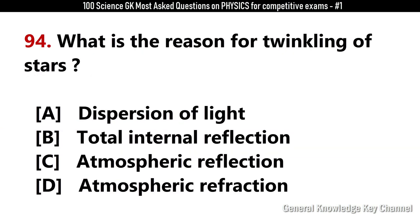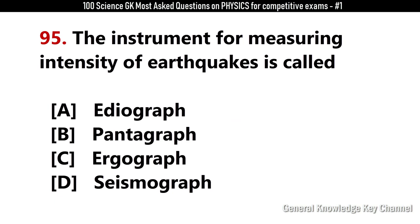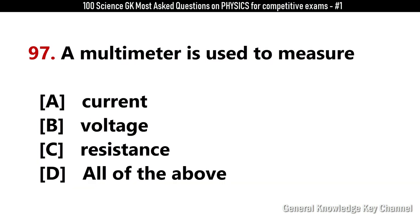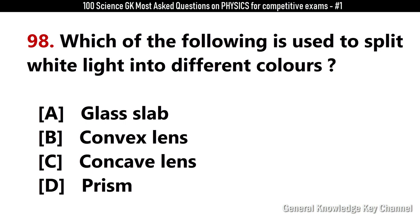What is the reason for the twinkling of stars? Answer D: Atmospheric refraction. The instrument for measuring the intensity of earthquakes is called? Answer D: Seismograph. Which one of the following animals can hear ultrasonic sound? Answer D: Bat. A multimeter is used to measure? Answer D: All of the above — current, voltage, and resistance. Which of the following is used to split white light into different colors? Answer D: Prism.